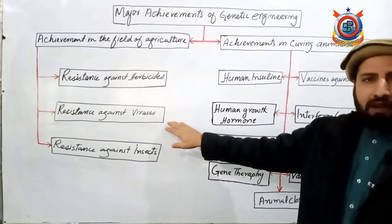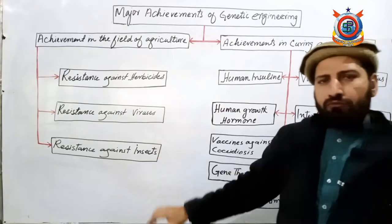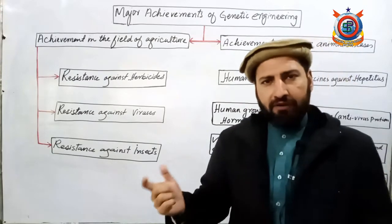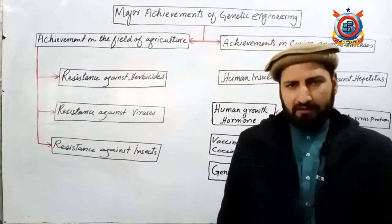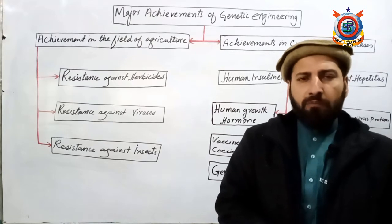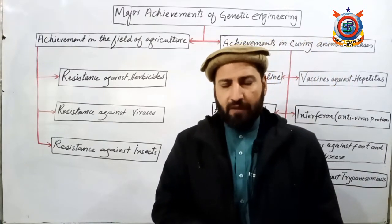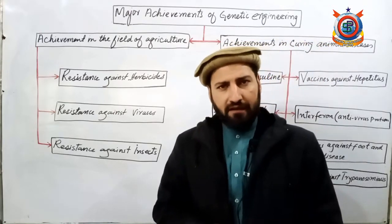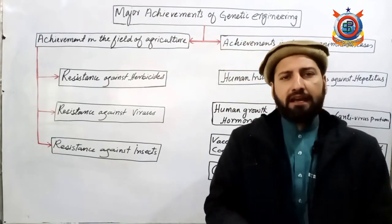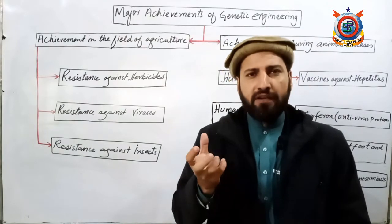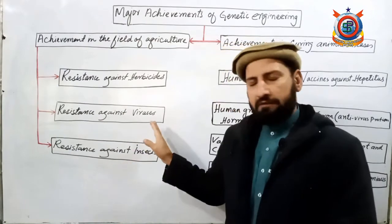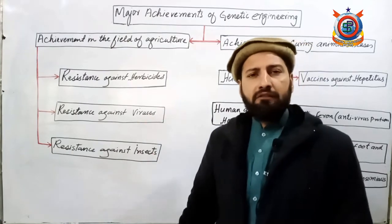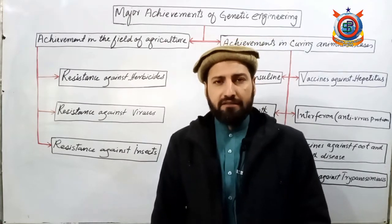دوسری major achievement ہے resistance against viruses۔ بہت سارے crops کو viruses کے خلاف resistant بنا دیا گیا ہے۔ For example, tomato، tobacco، اور potato پر جب virus attack کرتا تھا تو پوری populations کو destroy کر دیتا تھا جس سے پیداوار بہت کم ہو جاتی تھی۔ اب ان plants میں ایک ایسی gene enter کی گئی ہے جو express ہونے پر ایسے proteins develop کرتی ہے جن کی موجودگی میں کوئی بھی virus اس plant میں disease cause نہیں کر سکتا۔